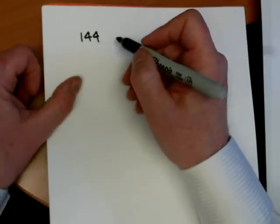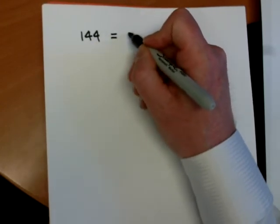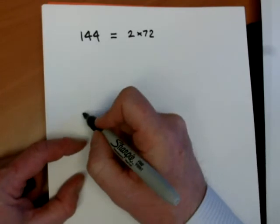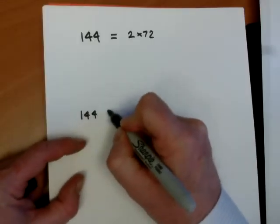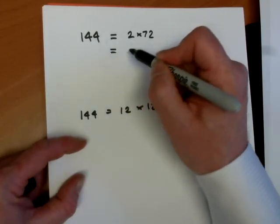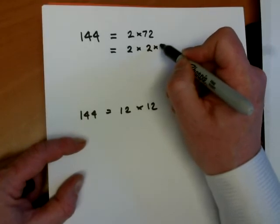So I'll start off when the autofocus comes down. 144 equals 2 times 72, or perhaps another student thought it was 12 times 12 to start with. I'll go both ways. So, 2 times 72, you might write 72 as 2 times 36 by halving.